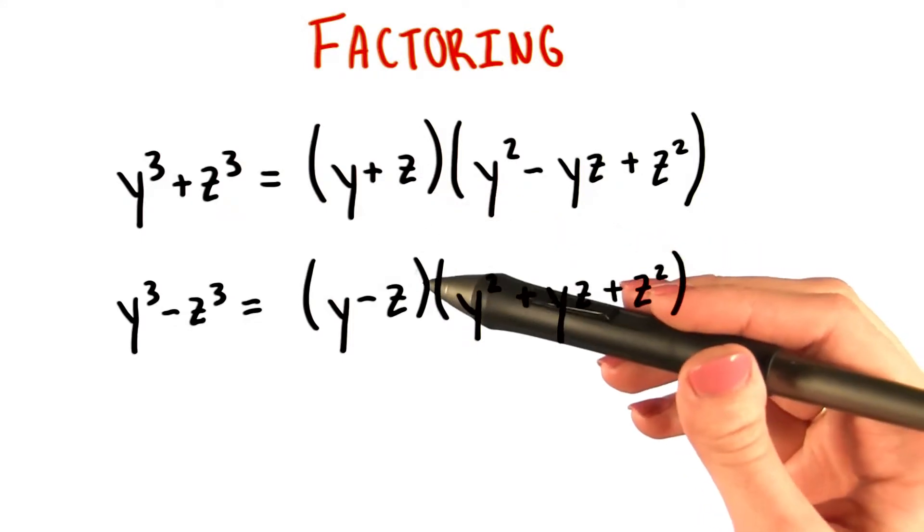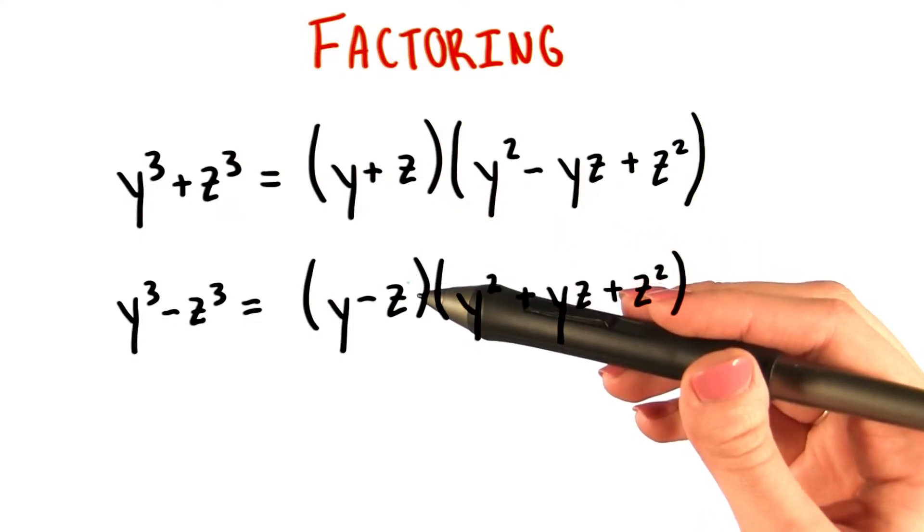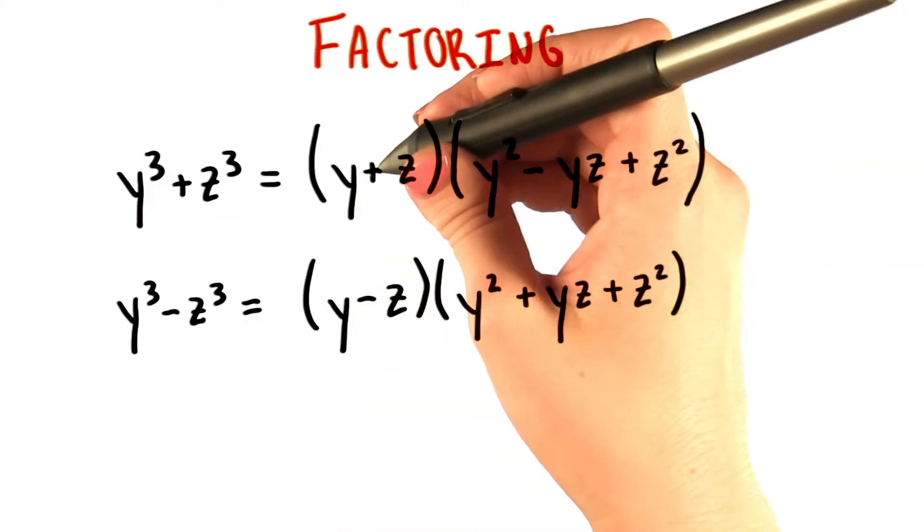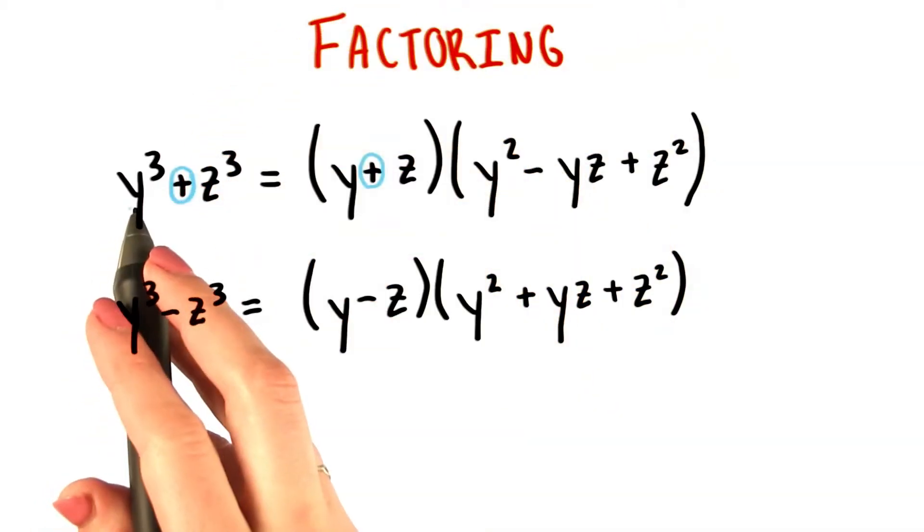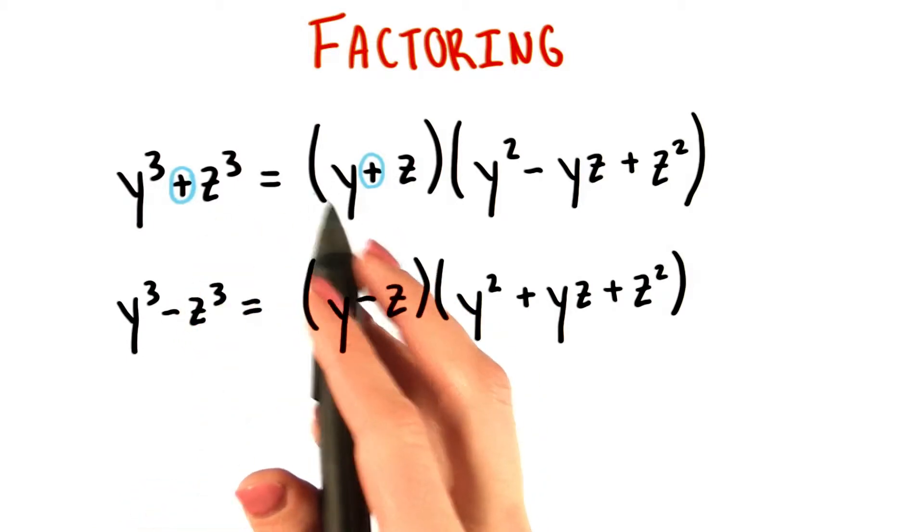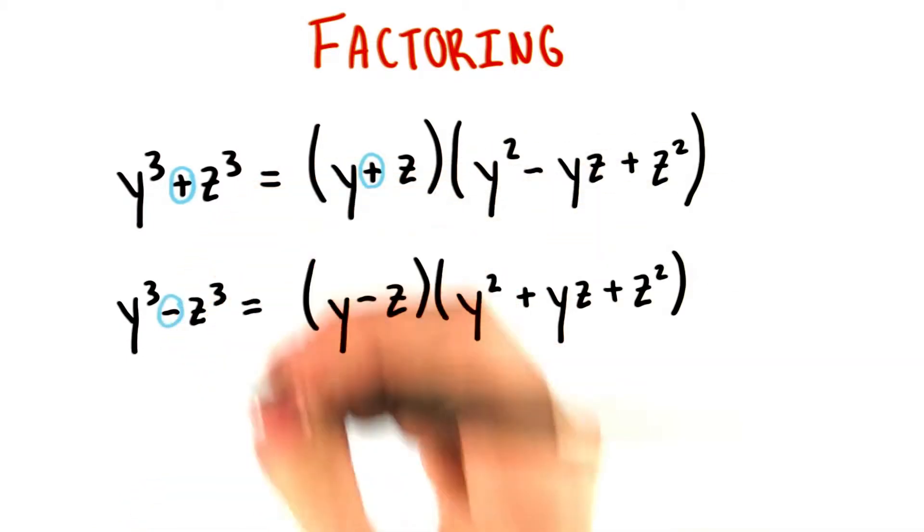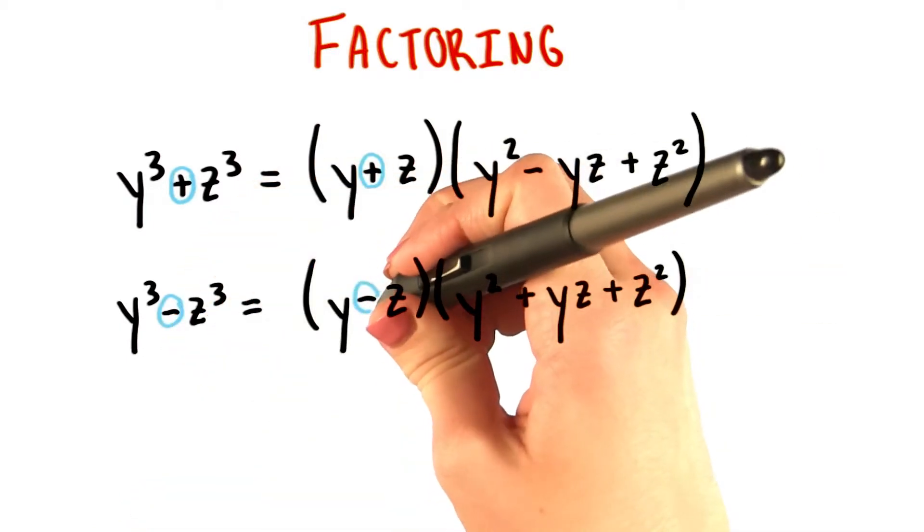The binomial that's involved in the factorization of each expression has the same sign between its two terms as the original expression did between its two terms. So y³+z³ has a factor of y+z, and y³-z³ has a factor of y-z.